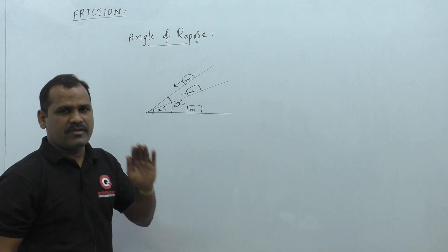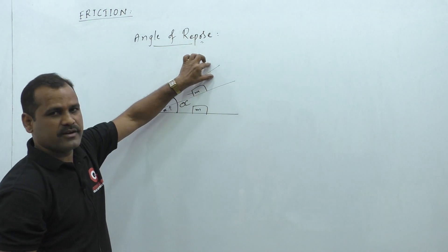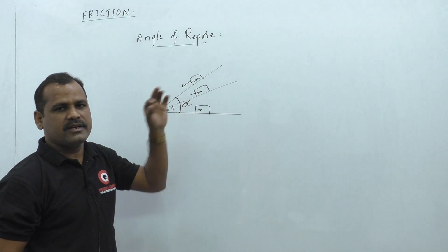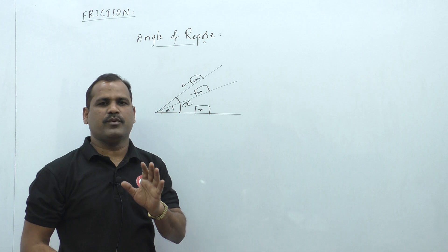That means the minimum angle that this inclined plane should make with the horizontal to get sliding of this object is taken as the angle of repose.